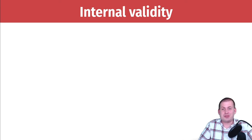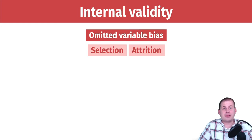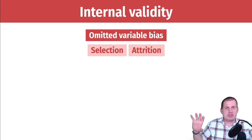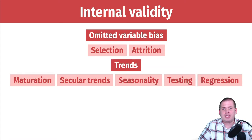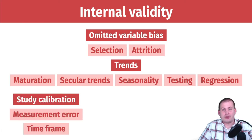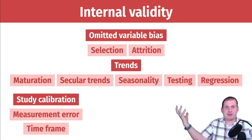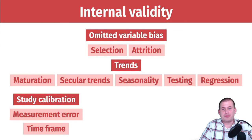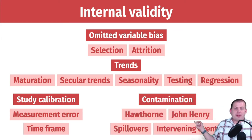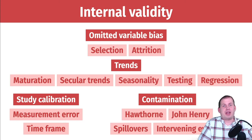We're going to talk about some general categories of internal validity issues. The first is omitted variable bias, where selection and attrition distort your findings. You have trend-based issues like maturation, secular trends, and seasonal trends. There are testing issues and regression to the mean. There might be study calibration problems — where you're measuring things incorrectly — issues with recording numbers, the time frame of the study, and finally contamination issues like Hawthorne effects, John Henry effects, spillovers, and intervening events.